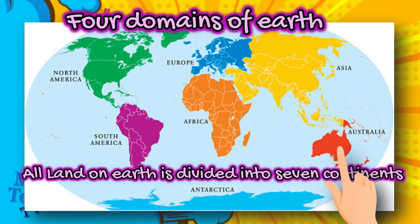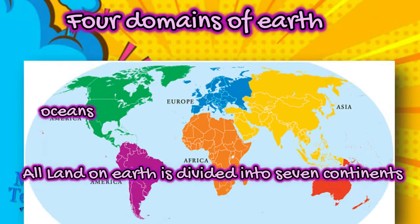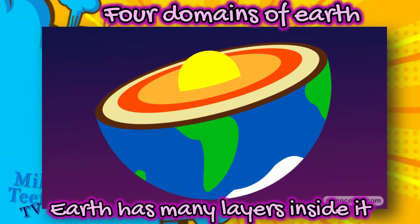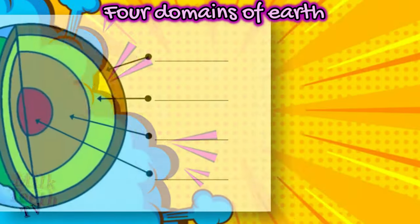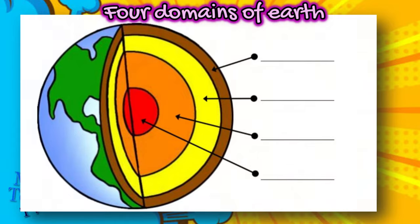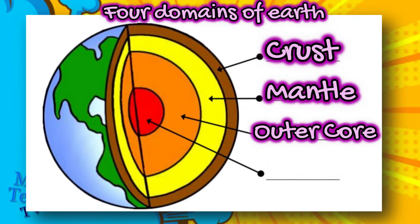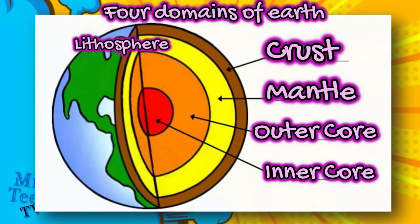Australia is the smallest continent. All these landmasses are separated by large water bodies called oceans. If you take a small cross-section of Earth, you would find that our Earth has many layers inside it. These layers are namely the crust, the mantle, the outer core, and the inner core. The upper crust and mantle mainly form the lithosphere, the domain of land on Earth.